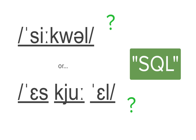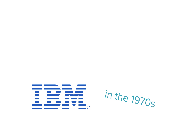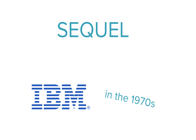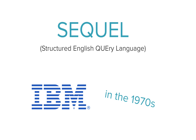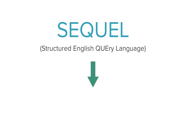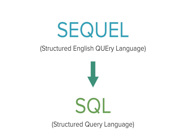Well, SQL was originally invented at IBM in the early 1970s, and the first version was called SEQUEL — it stood for Structured English Query Language. That acronym, SEQUEL, was later changed to SQL because SEQUEL was already trademarked by an airplane company, and companies really don't like getting into trademark lawsuits.